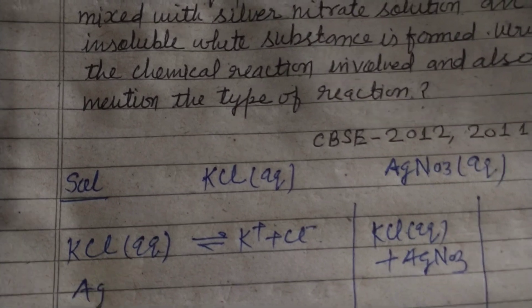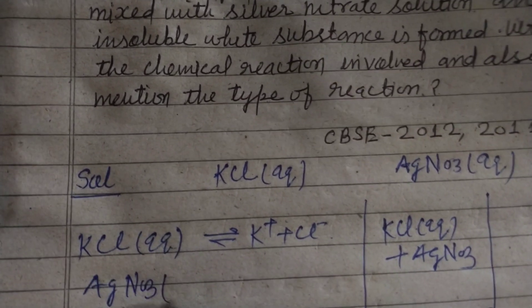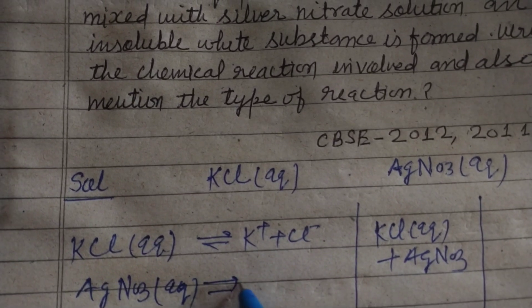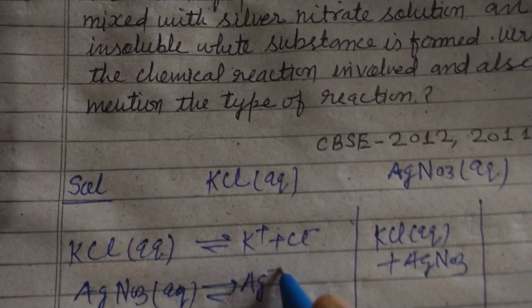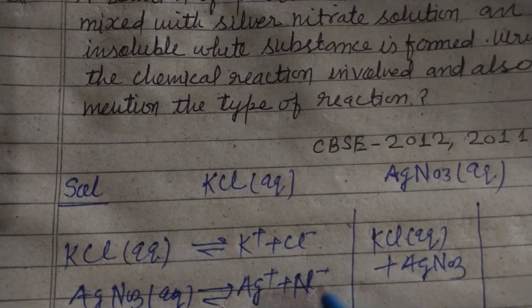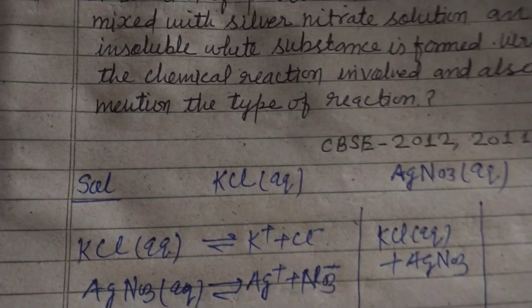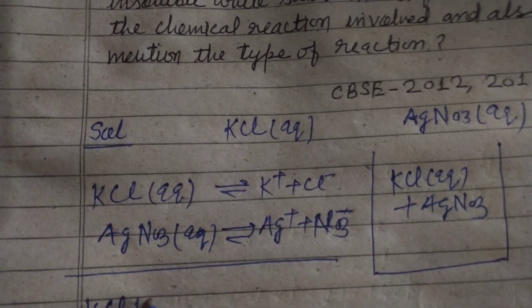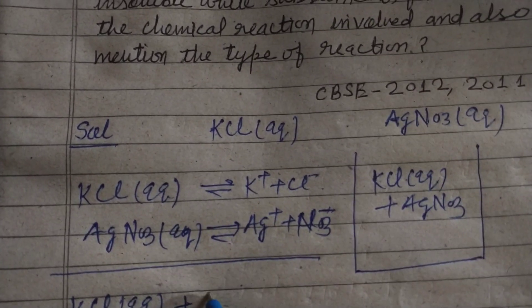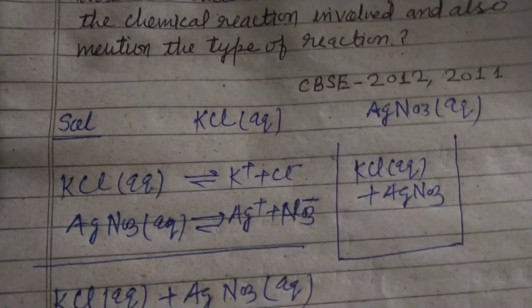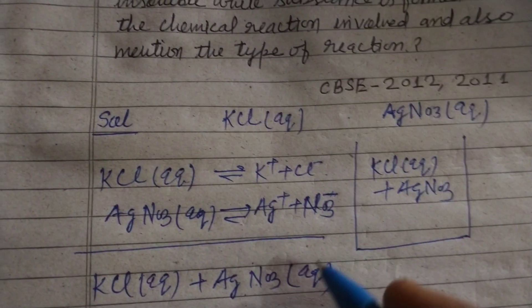AgNO3 breaks into Ag plus, and NO3 minus, and they react as KCl plus AgNO3. The substances exchange ions.